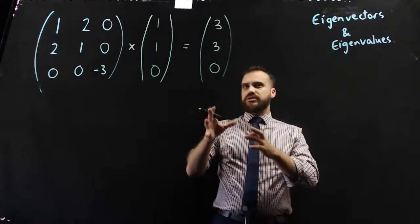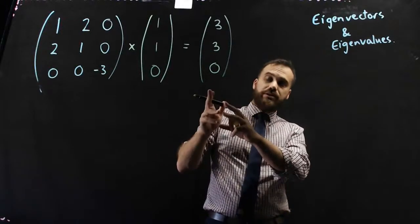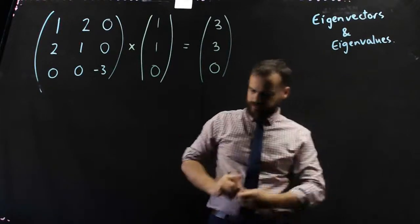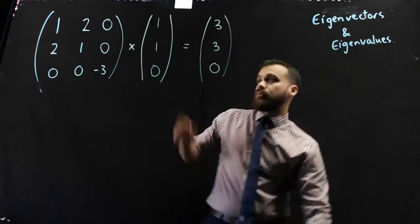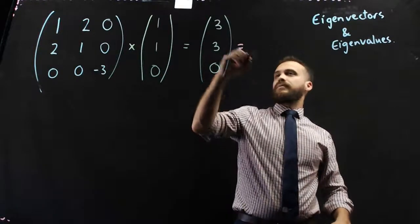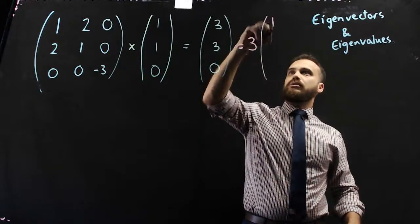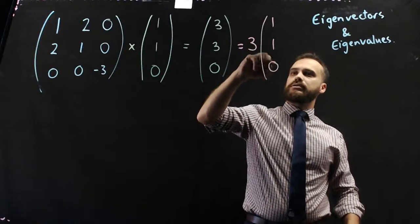Now, that's interesting. If I had done any other one, I would have got some weird answer, but you can see 1, 1, 0 and 3, 3, 0 are related. Now, 1, 1, 0 and 3, 3, 0, we can rewrite that as 3 times 1, 1, 0.